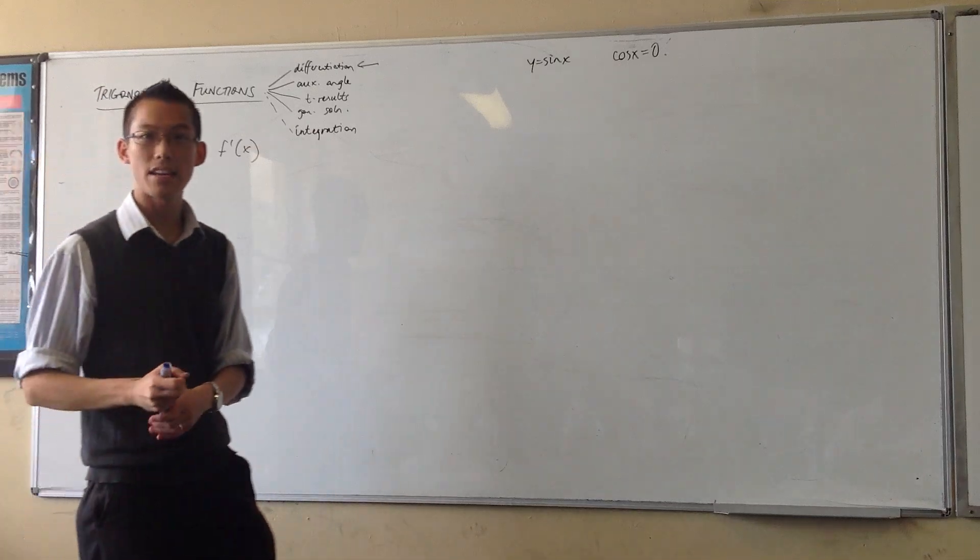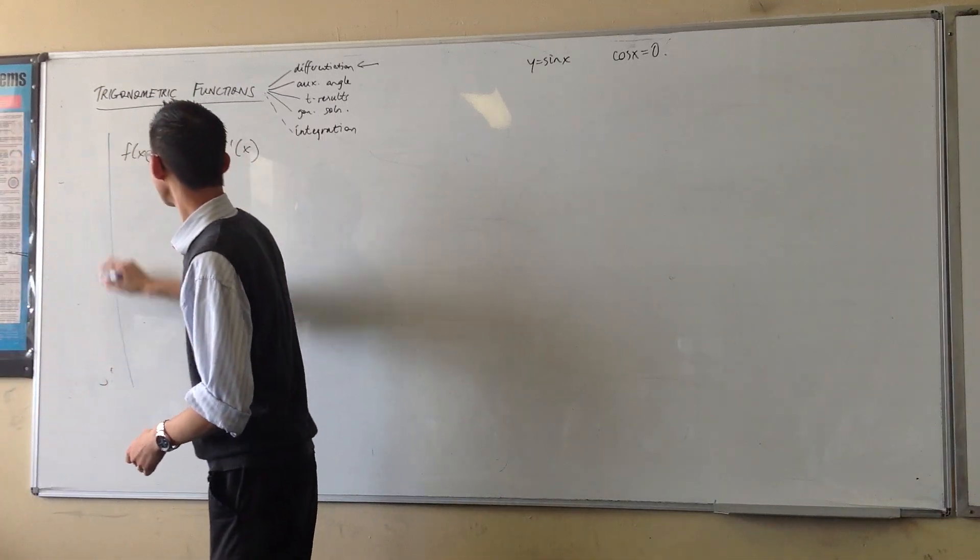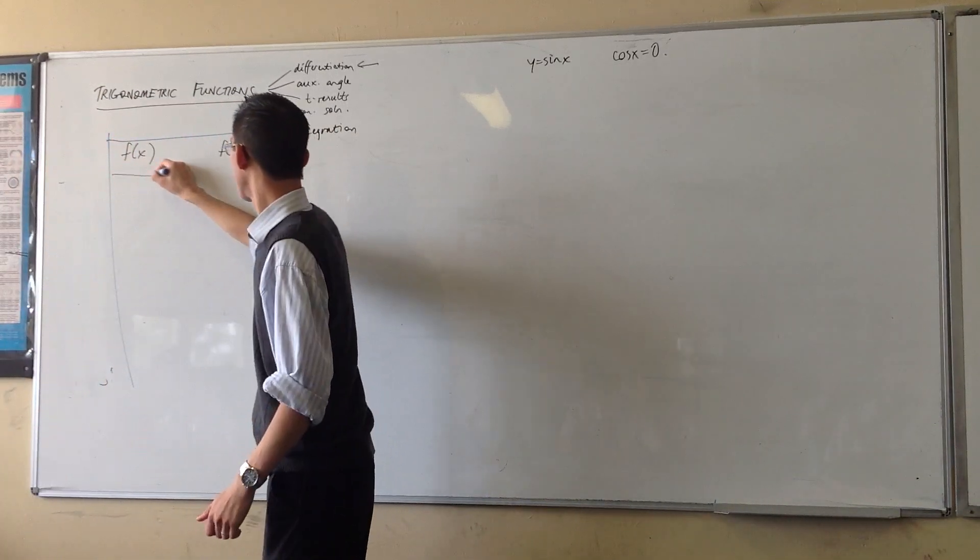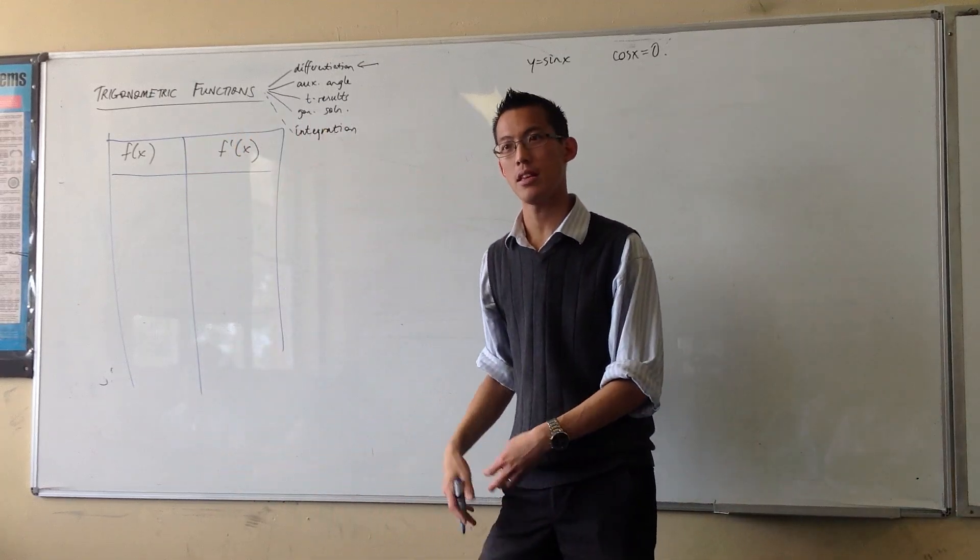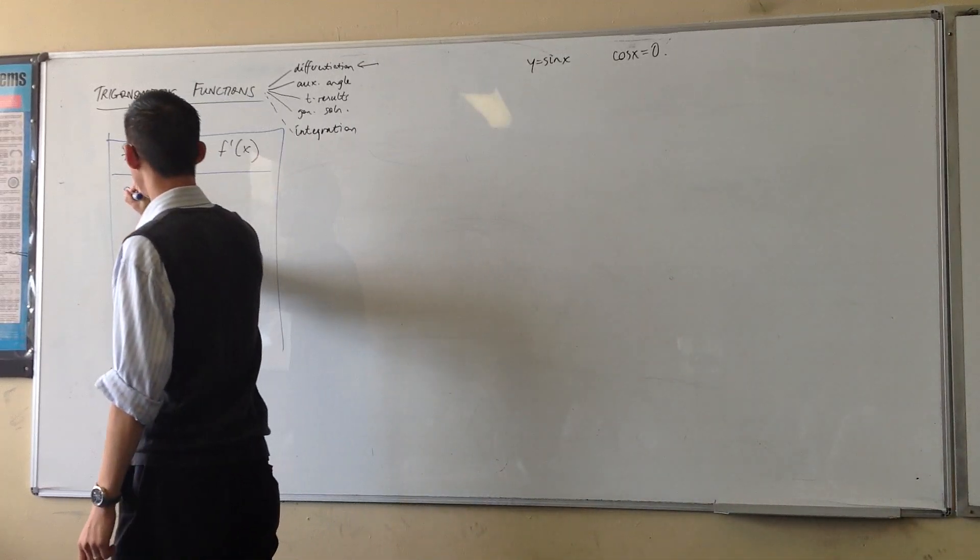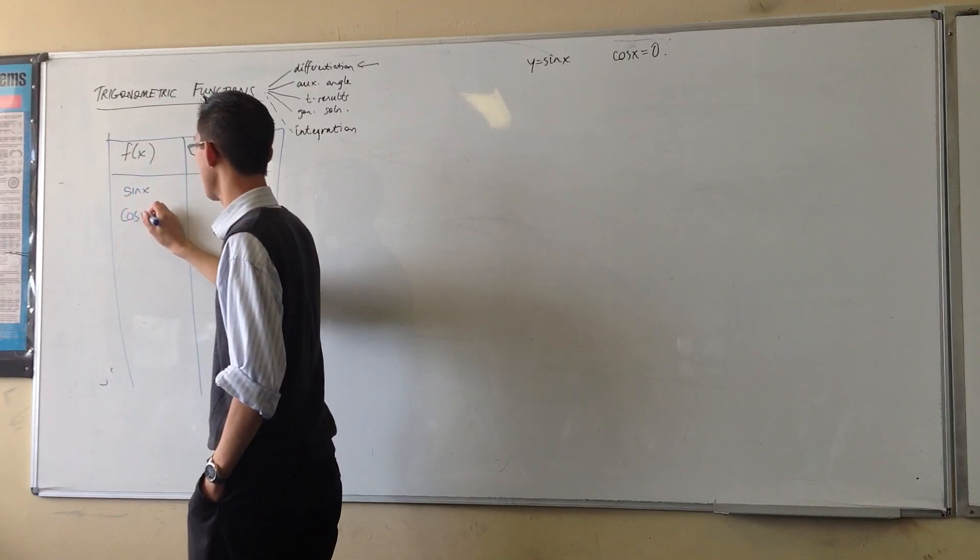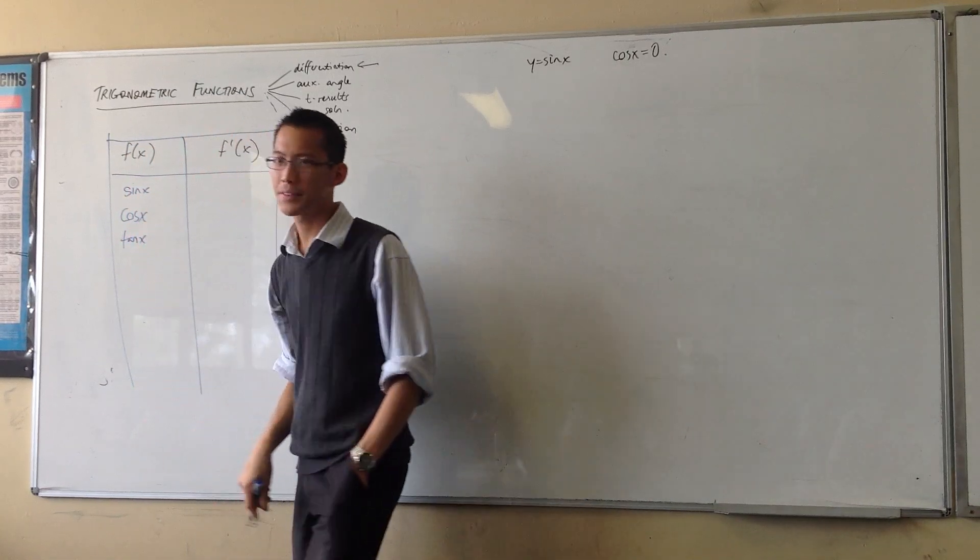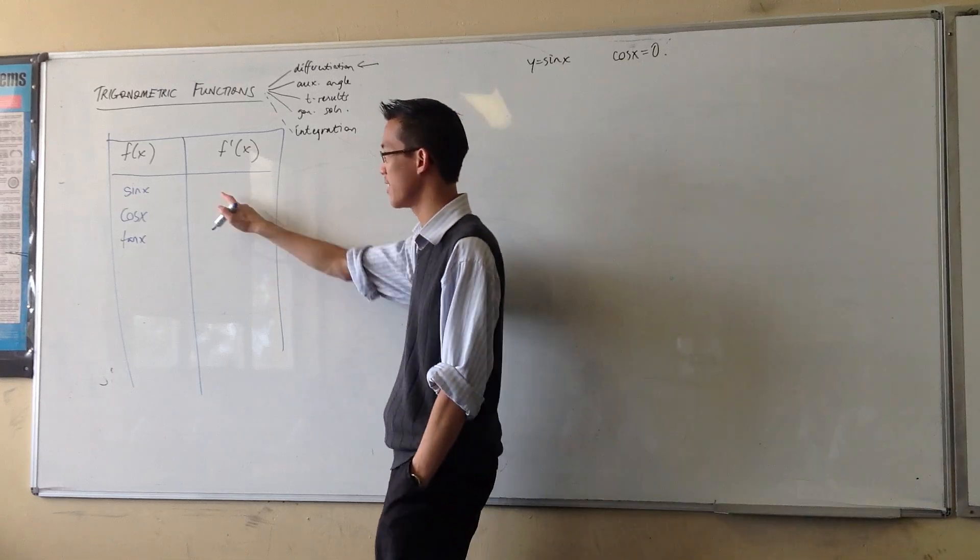I'm thinking about the six main trig functions, right? The six main ones. So you've got the three basic ones and then you've got their reciprocals. So, your basic ones are here. And we've done these to death by now, right? So can you tell me off the top of your heads?